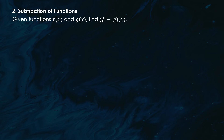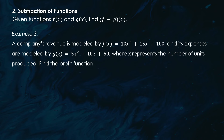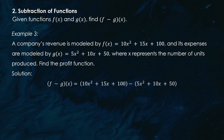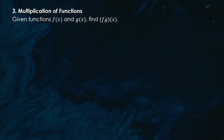Here's a situational problem. A company's revenue is modeled by f(x) = 10x² + 15x + 100 and its expenses by g(x) = 5x² + 10x + 50, where x is units produced. To find the profit function, we subtract expenses from revenue: (f − g)(x) = 10x² + 15x + 100 − 5x² − 10x − 50. Combining like terms gives us the profit function: 5x² + 5x + 50.